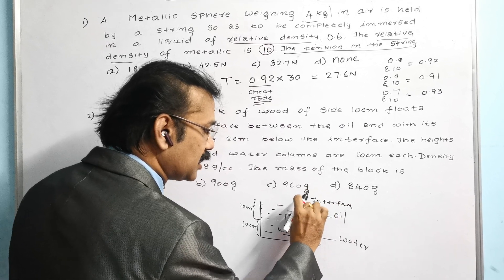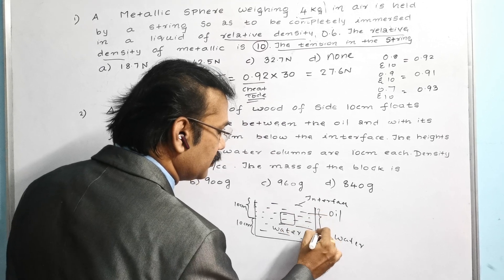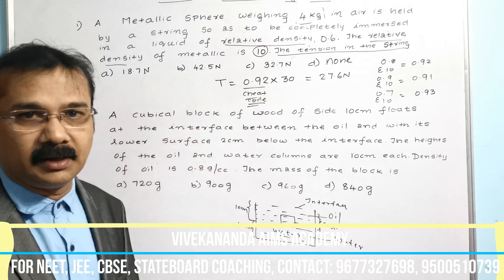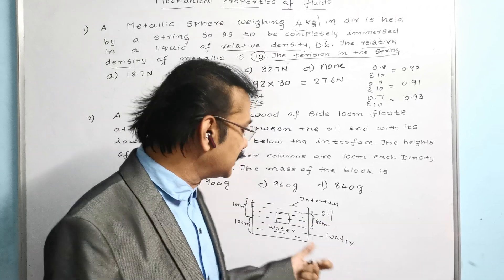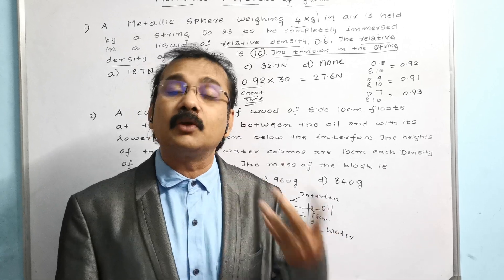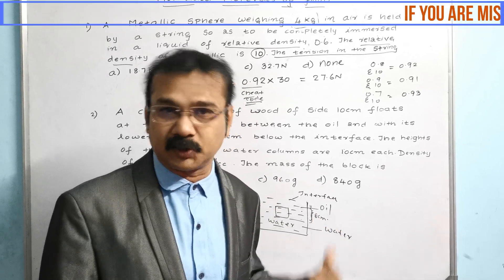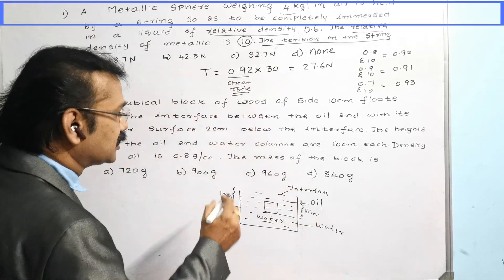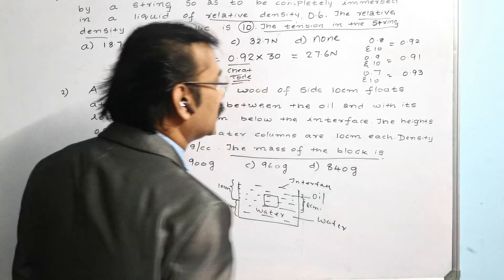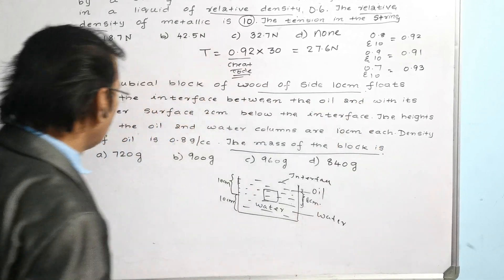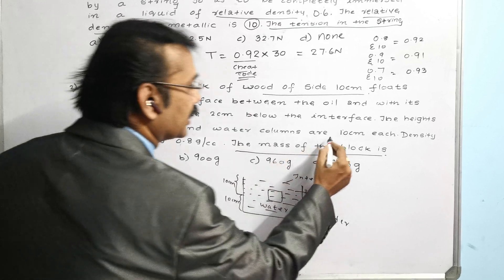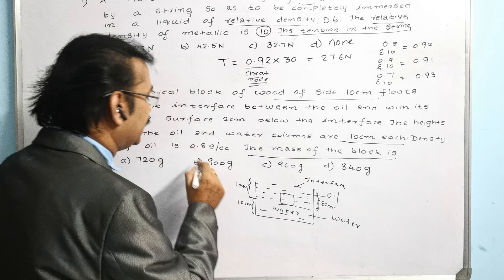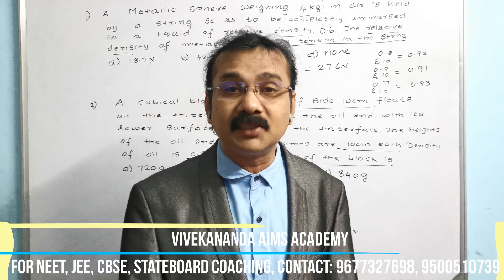From the diagram: the total block height is 10 cm. The interface is 2 cm from the bottom of the block, so 8 cm of the block is in the oil and 2 cm is in the water. The question asks for the mass of the block. Both the oil-column side and water-column side are 10 cm — note that both sides are the same. Density of oil is given as 0.8 g/cc.